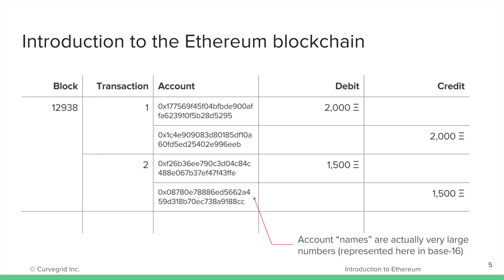In the Ethereum blockchain, account names are actually very large numbers called addresses. There are roughly as many possible Ethereum account addresses as there are atoms in the planet Earth. Bank account numbers would typically be assigned sequentially, but Ethereum account addresses are generated from a randomly selected private key that controls access to a particular public Ethereum account address. Given the size of the numbers involved and the cryptographic algorithms employed in private key and address creation, it's essentially impossible for the same address to be generated by someone else.